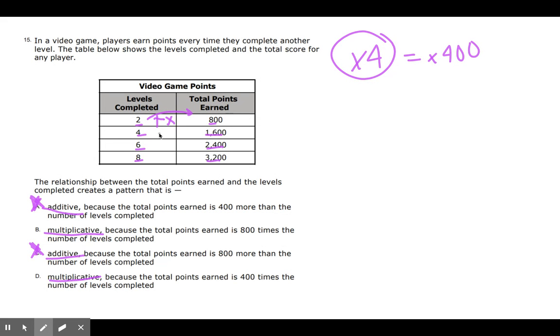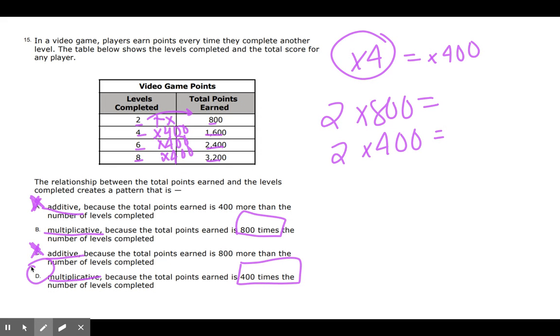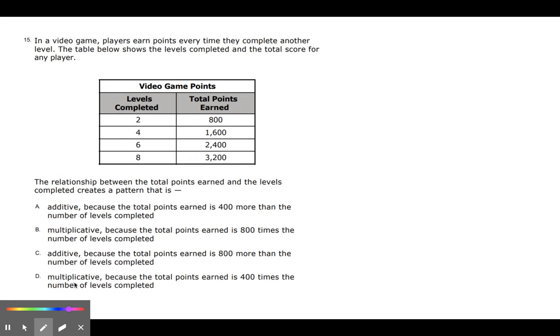Hopefully you chose correctly. If I'm multiplying all of these by 400, 400, 400, I only have two choices. Is it multiplicative because the total points earned is 800 times the number of levels? Or is it 400 times the number of levels? So the number of levels is 2. So is it 800 times? Or is it 400 times? So hopefully you chose the correct answer and you put D. It is 400 times the number of levels completed.